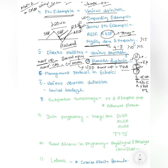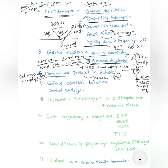Next is the management protocol of ectopic pregnancy. The most important part is knowing when to go conservative versus surgical, and which surgery — salpingectomy or salpingostomy. There have been previous exam questions on this topic. If you have time, please read about salpingectomy and salpingostomy.